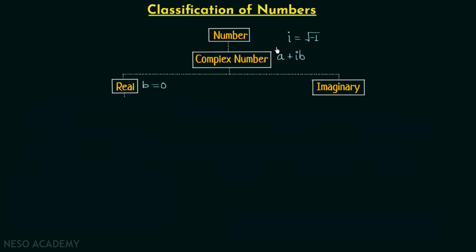Now what if a is equal to zero and b is not equal to zero? In that scenario the complex number will be equal to ib — purely imaginary. So the complex number will be real when b equals zero, and imaginary when a equals zero and b is not equal to zero.